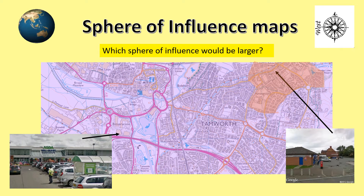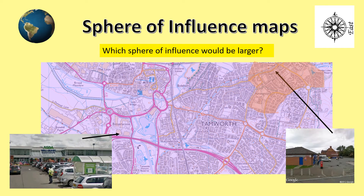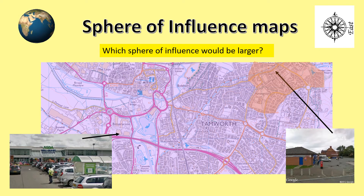On the map of Tamworth we can see an example here with a red shaded area. This represents the range from which the small local shop in Ammington will attract customers. The very large Asda however draws customers from even places beyond what we can see on the map, including people who live near the small Ammington shop. These people will go to the Asda when they need to purchase items not stocked locally.